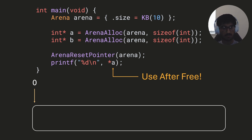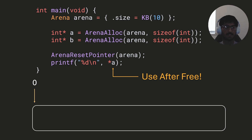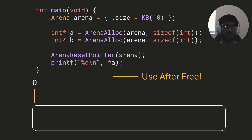This seems like a big issue — dangling pointers that might accidentally be used while still in scope after resetting the arena. There's an extremely useful tool called ASan (AddressSanitizer), a runtime bundled with your program that can detect many memory corruption bugs: double-frees, use-after-frees, memory leaks, and more. For arenas specifically, we have to use the ASan API to tell it which parts of the arena are invalid.